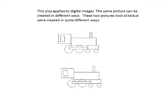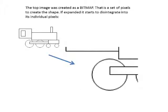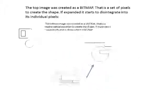The same picture can be created in different ways. These two pictures look alike, but were created in quite different ways. The top image was created as a bitmap. That is, a set of pixels to create the shape. If expanded, it starts to disintegrate into its individual pixels.